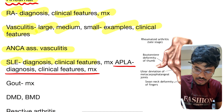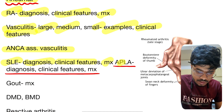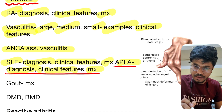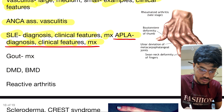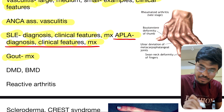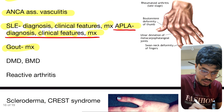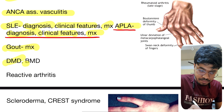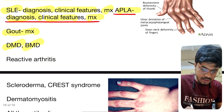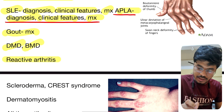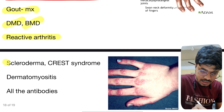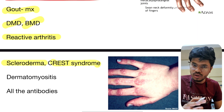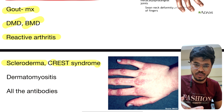SLE — diagnosis, clinical features — all are important. Anti-dsDNA antibody, anti-Smith antibody, and all the antibodies are important, as well as management of SLE. APLA — diagnosis, clinical features, management — very important. Gout management. Duchenne muscular dystrophy and Becker muscular dystrophy — again important topics. Reactive arthritis.